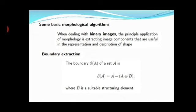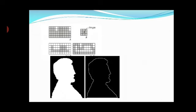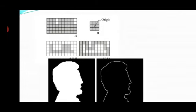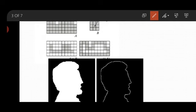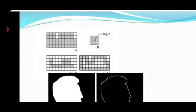Here is an example of how we use it for boundary extraction. Consider image A with darkened boxes as the content of the image, with empty white areas. We have a structuring element with a 3 by 3 box, shaded gray. The basic operation we perform is to keep the structuring element B on the image pixel by pixel. If it matches, we retain the content; if not, we erase the content of image A.